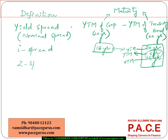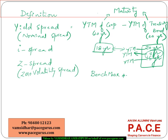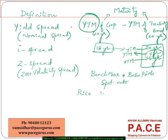Then we talk about Z-spread, or zero volatility spread. Instead of directly doing a subtraction, here we add some basis points at each spot rate rather than doing the differentiation at a YTM level — trying to find the difference at each spot rate level. One unique value is added to all the spot rates to equate the present value of the cash flows to the market price of the bond.